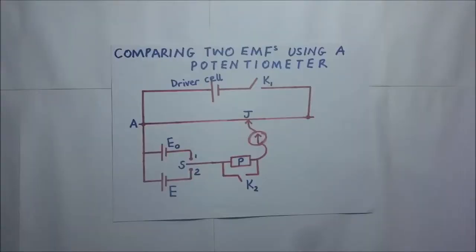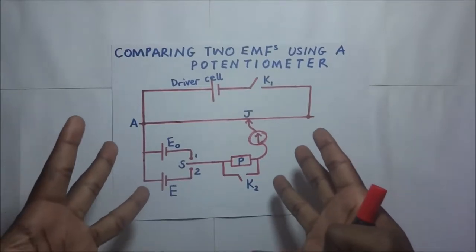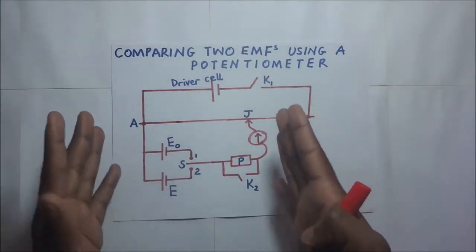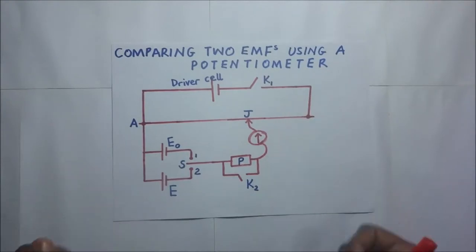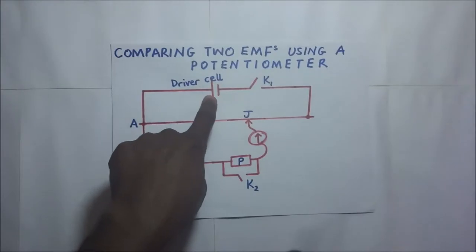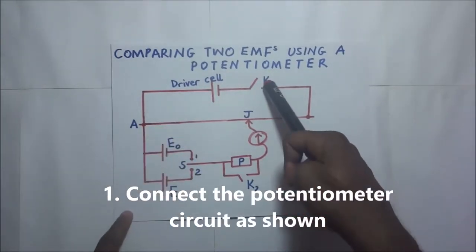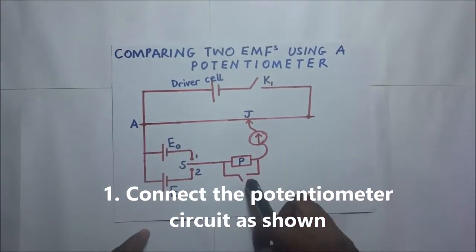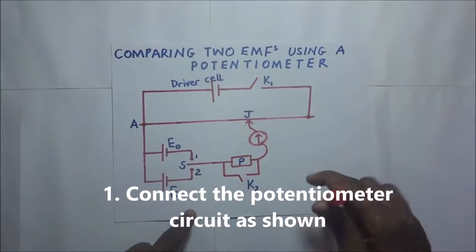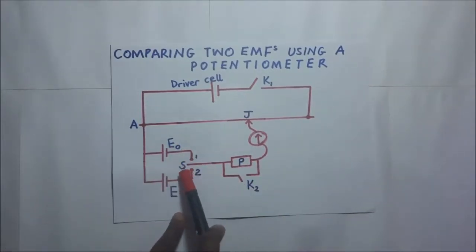When comparing two EMFs using a potentiometer, we can use this kind of circuit the way I have drawn it. The EMFs of two cells can be compared using a circuit where we have the driver cell, switch K1, switch K2, and switch S.